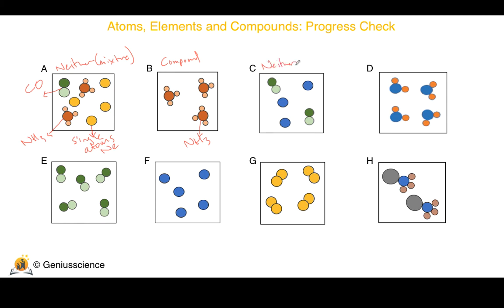C is a mixture again, so it's neither an element nor a compound. We have the blue atoms in there representing an element as single atoms. Again, this is most likely to be a noble gas. We could say argon in this case, but it could be any of them.